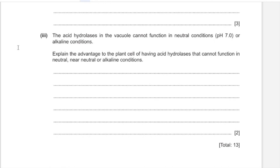Acid hydrolases in the vacuole cannot function in neutral or alkaline conditions. The advantage to the plant cell is that if acid hydrolases leak out of the vacuole or lysosomes, they would be denatured or partially denatured by the neutral pH of the cytoplasm and would not perform unwanted digestion of organelles or other cellular components. That concludes this paper — thank you for watching.